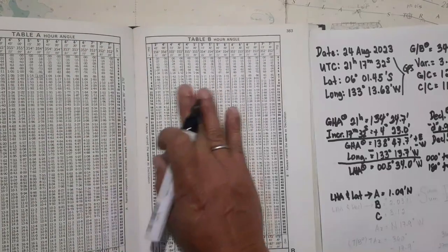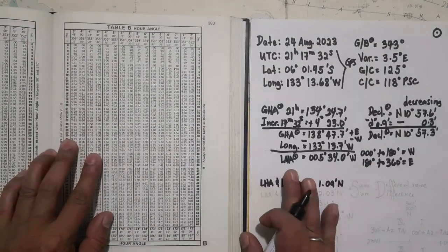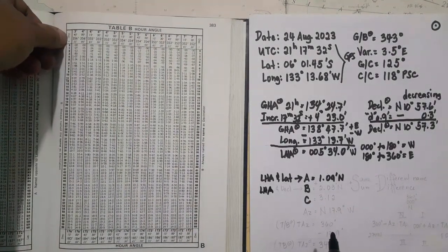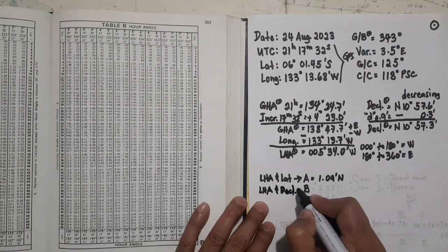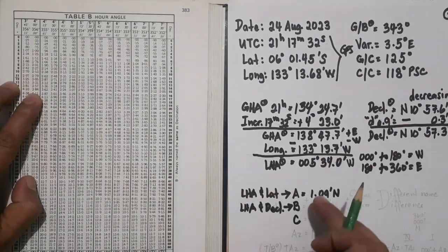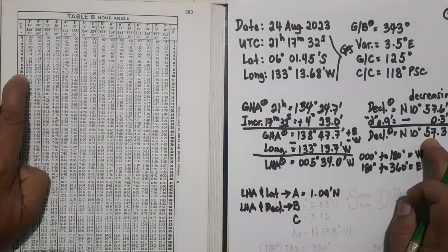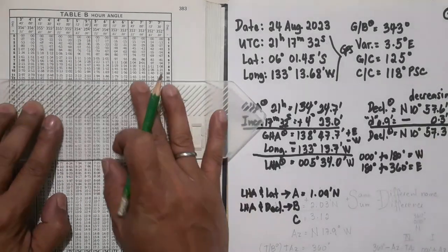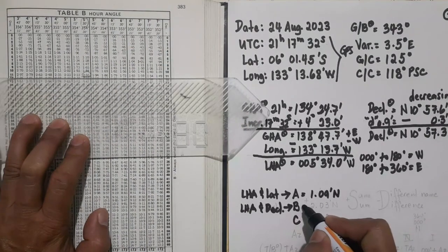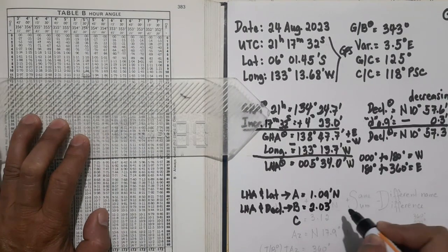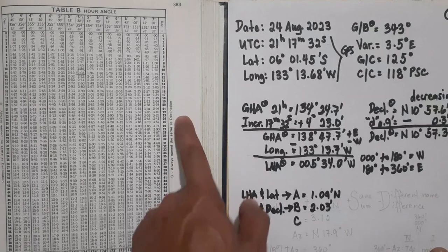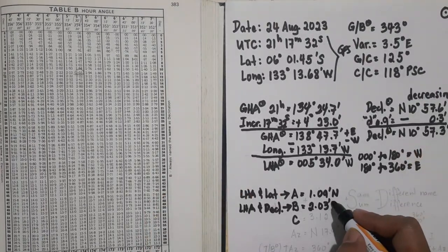For Table B on the right-hand page, we need the same hour angle and the declination. Our hour angle is 5 degrees 30 minutes. For our declination of 10 degrees 57.3 minutes, taking the nearest value — since 57.3 is close to 11 degrees — we use 11 degrees under the column 5 degrees 30 minutes. The value of B is 2.03. For naming B: always name the same as declination. Since our declination is north, B is named north.